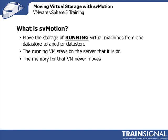So what is Storage vMotion? Basically it moves the storage, or the virtual machine disk file, of a running virtual machine from one datastore to another datastore. The virtual machine will stay on the server that it's on, unlike vMotion, and the memory for that virtual machine never moves, again unlike vMotion. So really the point of Storage vMotion or SVMotion is to move the virtual disk only. That virtual disk file could go from a local datastore to a shared storage area network, or it could go from one storage area network to another storage area network.